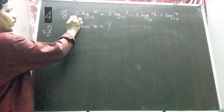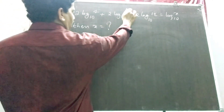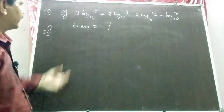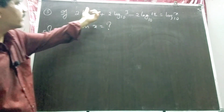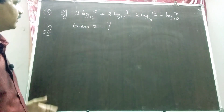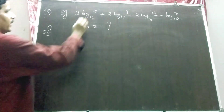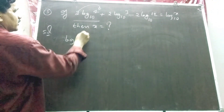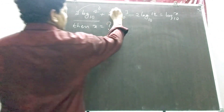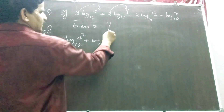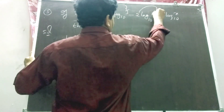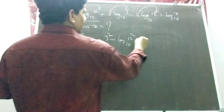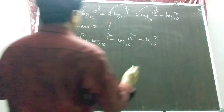Question 4: if 2·log₁₀4 + 2·log₁₀3 − 2·log₁₀12 = log₁₀x, then x equals how much? We need to simplify and equate to log₁₀x. Using the rule n·log_a(x) = log_a(x^n), this 2 becomes the power of 4, giving log₁₀(4²), plus log₁₀(3²), minus log₁₀(12²), equal to log₁₀x.